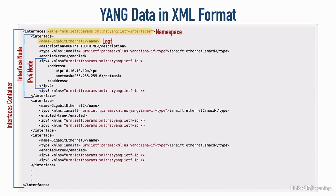If you look further down the file, there's also some information for interface gigabit ethernet 2 and gigabit ethernet 3. So what if we entered our configuration information in a data model like this and sent it to our device — whether it's Cisco, Juniper, Ericsson, or some other vendor? The point is we don't have to know vendor-specific configuration commands. We just put it in the data model and use a utility like NetConf to send the information out in XML format. NetConf carries, in XML format, the YANG data. We put our configuration in the YANG data model, encode it in XML, and send it using NetConf.